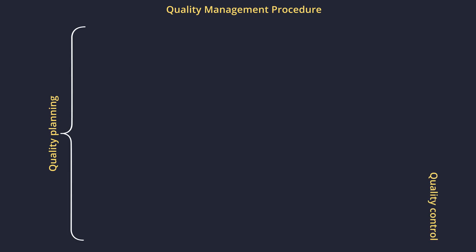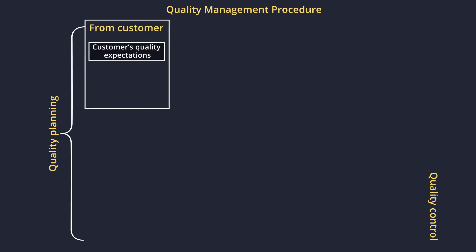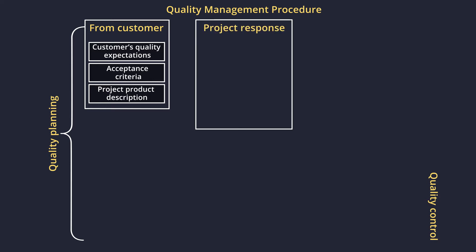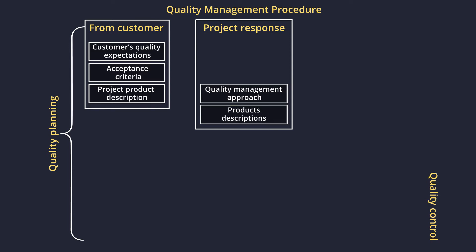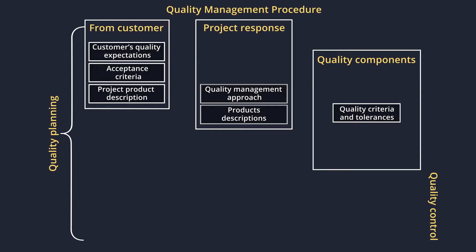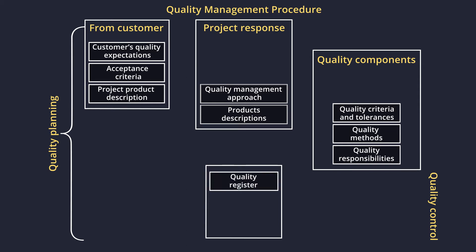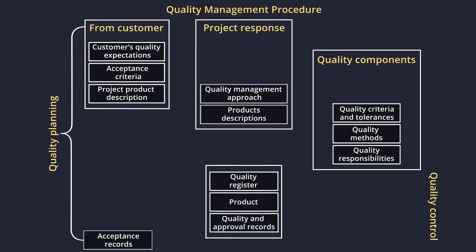Quality management procedures can be classified as quality planning and quality control broadly. Initially in this procedure, the requirements from customers are collected where customer's quality expectations, acceptance criteria, and project product descriptions are defined. Responding to this, the project's response would be creating quality management approach and product description. Quality components include quality criteria and tolerances, quality methods, and quality responsibilities. The quality register captures all the details where the quality requirements and action items done as part of quality management are captured. Based on which the product is produced and reviewed. Further in quality control, approval records are created and acceptance records are submitted to the stakeholders.